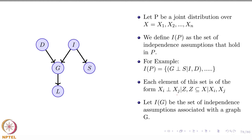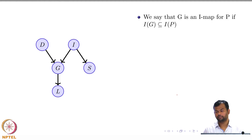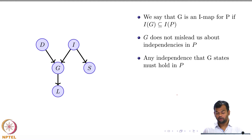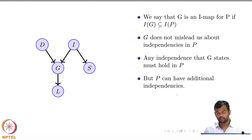Consider the graph G and let I(G) be the independence assumptions associated with this Bayesian network. We then say that the graph is an IMAP for the probability distribution P if I(G) is a subset of I(P). This means the graph will not mislead us about independences in P — anything the graph tells us will hold in P for sure. P could have additional independences, but at least the graph will not assert independences that do not exist in the original distribution.